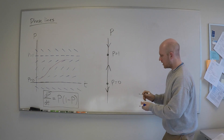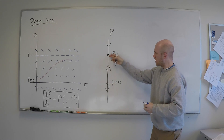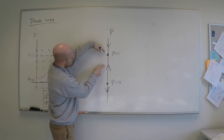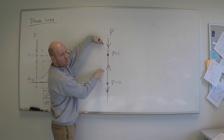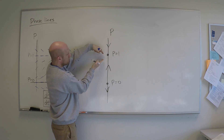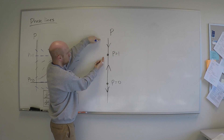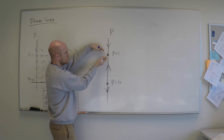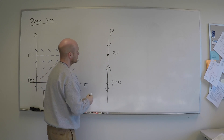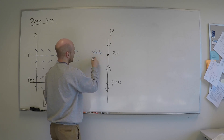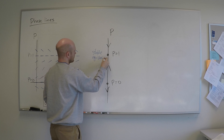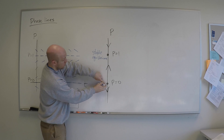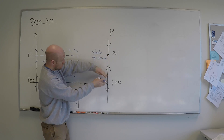Let's do a quick analysis of the two equilibrium points, 1 and 0. Looking at p equals 1 first, anywhere I start around 1, I will tend toward 1 — it's like the bottom of a valley. If I'm a little bit below 1, I tend toward it; if I'm a little bit above 1, I tend toward it. So this is called a stable equilibrium. On the other hand, p equals 0 is not stable — if I start a little bit on either side of p equals 0, I will roll off of it. It's like the top of a mountain, so this is an unstable equilibrium.